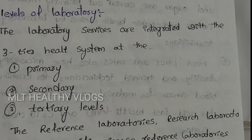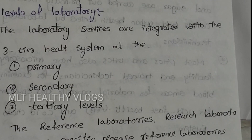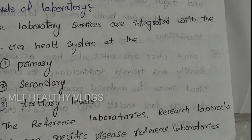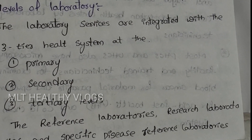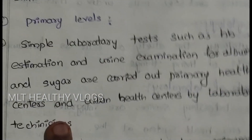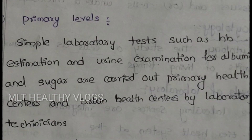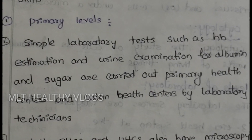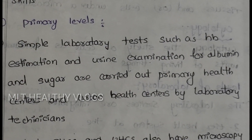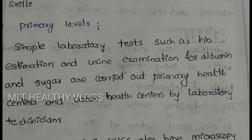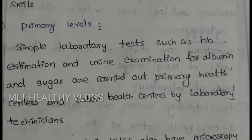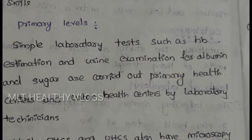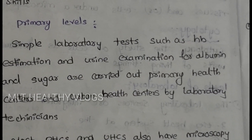Levels of laboratory: The laboratory service is integrated within the health system at three levels — primary, secondary, and tertiary — as well as reference laboratories, research laboratories, and specific disease laboratories. Primary level labs are simple laboratories performing tests such as hemoglobin estimation, urine albumin, urine sugar, urine examination including microscopic, physical, and chemical examination, and HPM estimation.